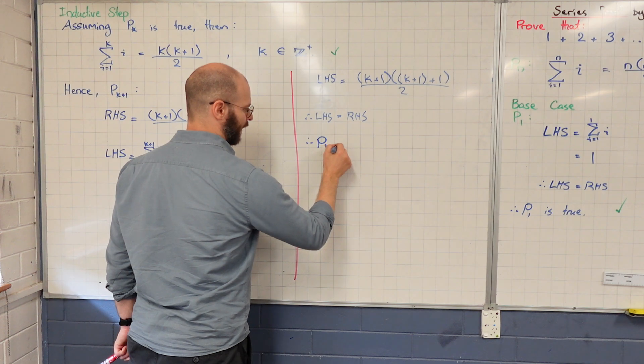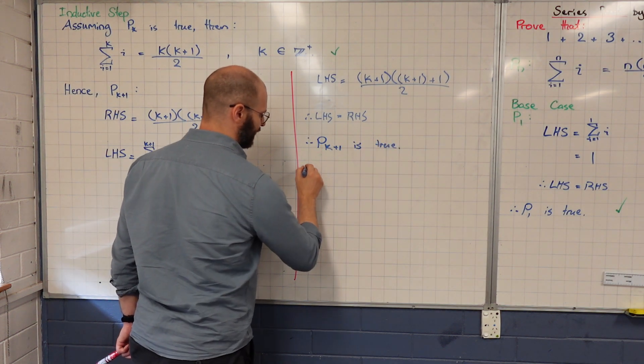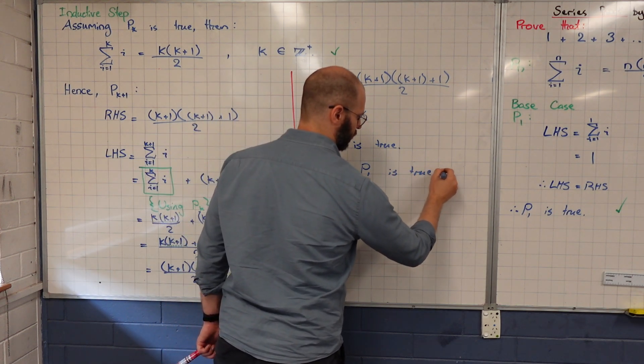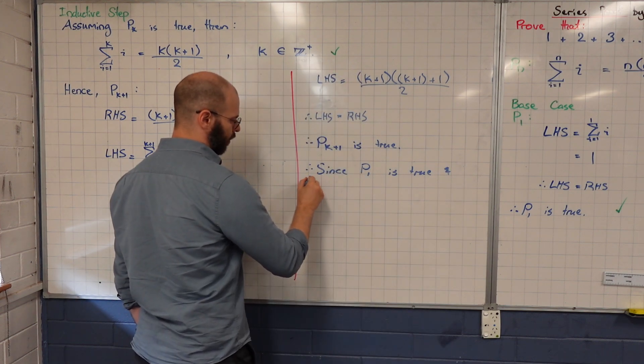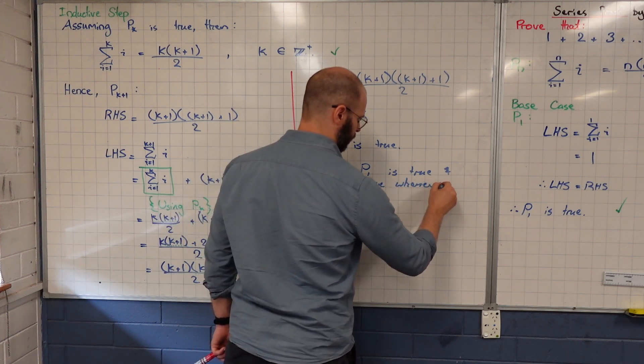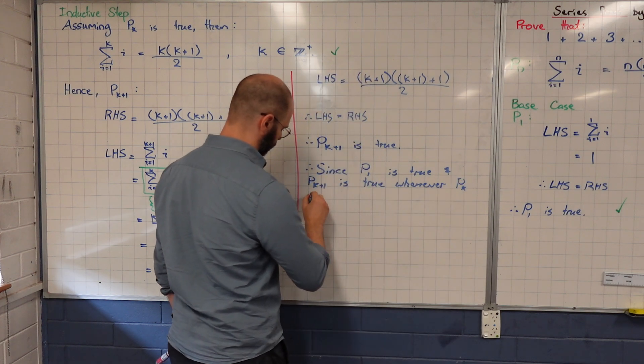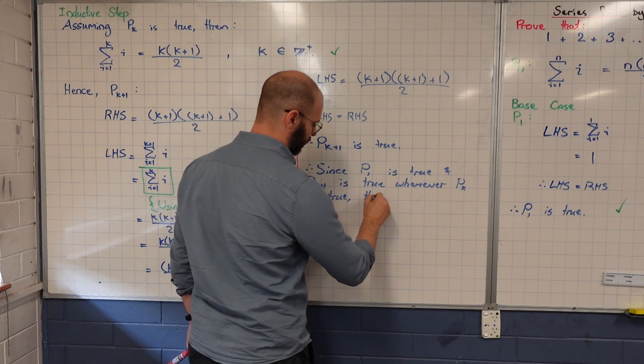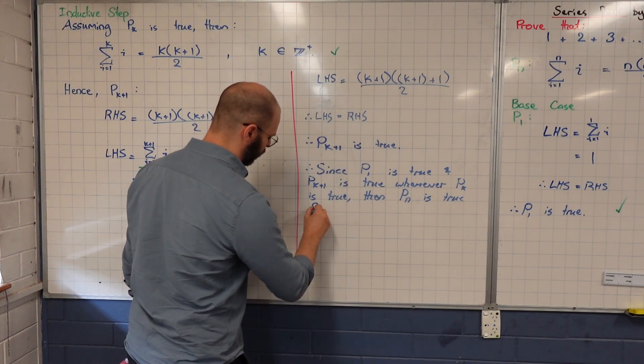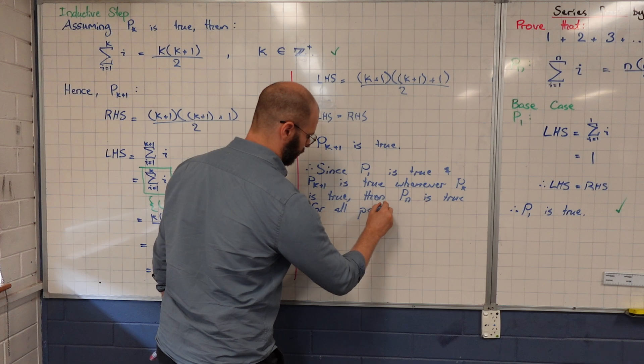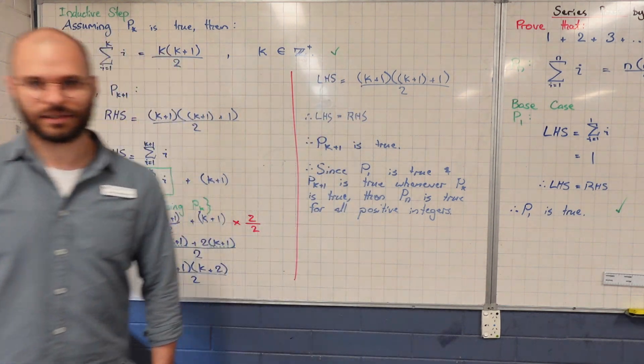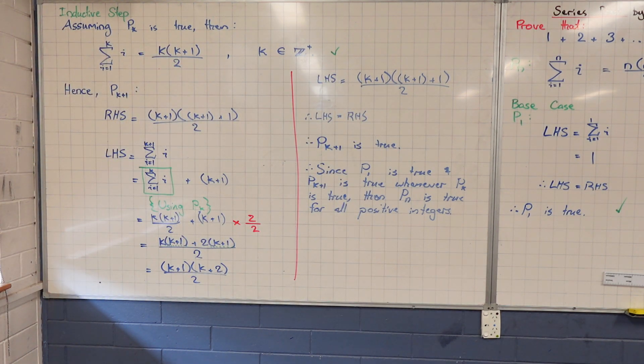Proving P of k plus 1 is true. And since P of 1 is true, and P of k plus 1 is true whenever P of k is true, then P of n is true for all positive integers. Is that cool? Do we see the method here? When we're doing serious ones, we're going to use this transformation here.